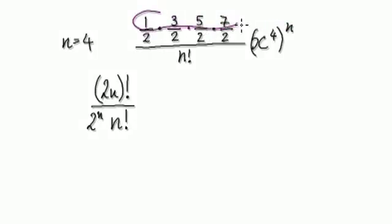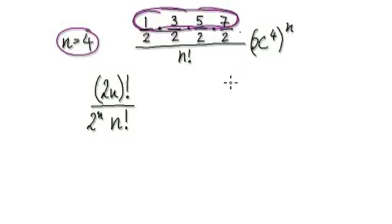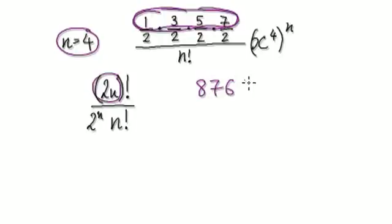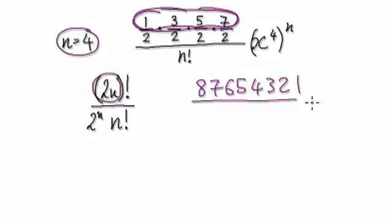But then if you look at the numerator, you can generate it. Remember this is for the case when n equals 4. You can generate this numerator because if you consider 2n factorial, which would be 8 times 7 times 6 times 5 times 4 times 3 times 2 times 1, and then you need to somehow get rid of all the even ones.